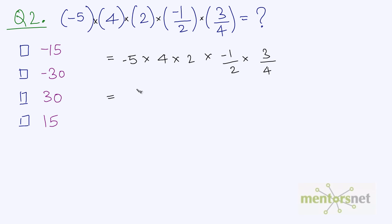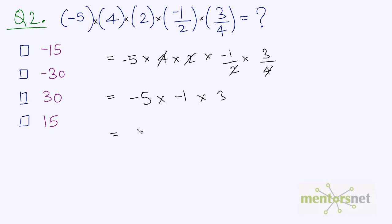You can solve this traditionally from left to right, or you can cancel out terms. The 4s cancel out and the 2s cancel out. What remains is minus 5 times minus 1 times 3. Since these are same-priority operations, we solve left to right: minus 5 times minus 1 equals plus 5, times 3 equals 15. There's our answer: 15.